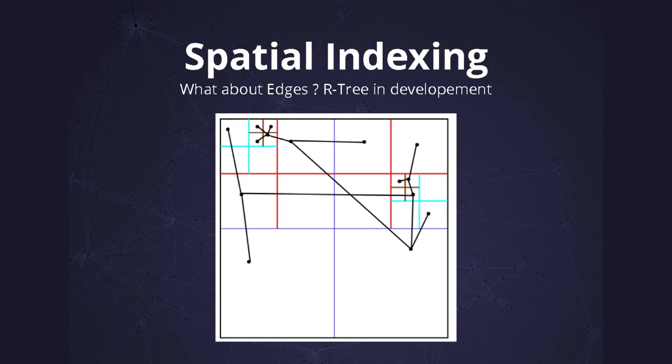However, in a graph there are not only nodes but also edges. The problem with this solution is that edges go across several boxes, so this approach isn't that efficient. Another data structure that can be used is called R-tree — something we are developing for Sigma.js that will be available soon. R-tree is something to optimize that, and if you have questions on R-tree later I can explain more.